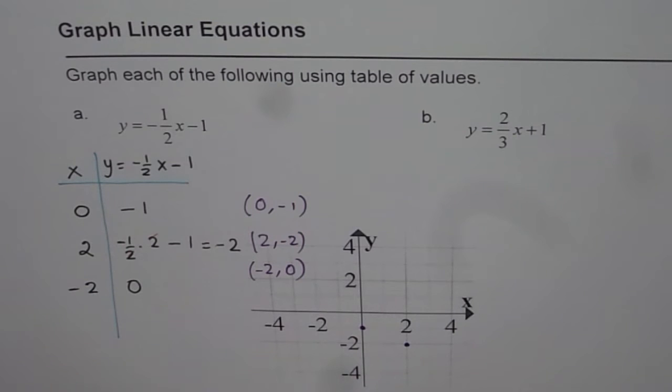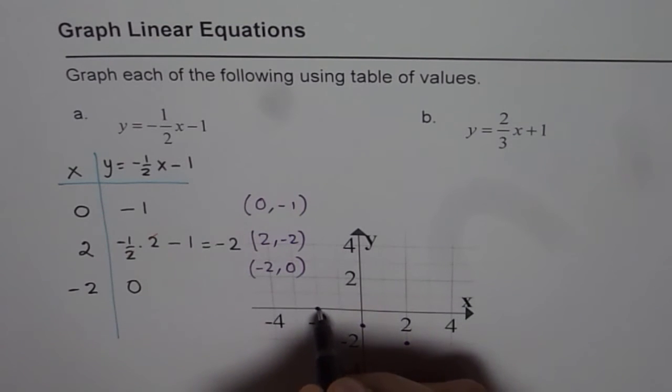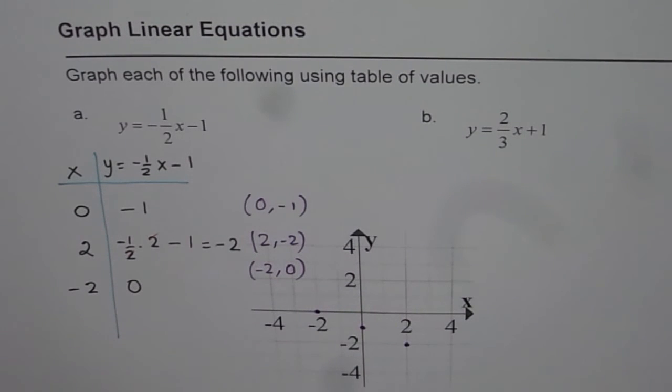The next point is 2 minus 2. That means here. And then we have minus 2, 0. So, minus 2 and 0. This is our x-intercept. Since the point lies on the x-axis.